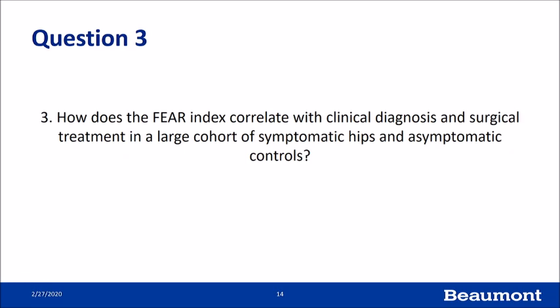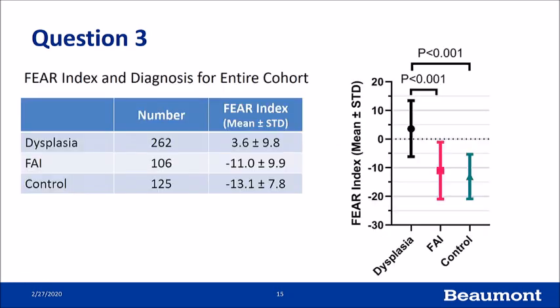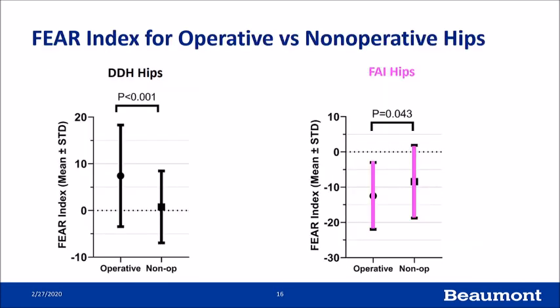The FEAR index correlated well with clinical diagnosis and surgical treatment. Of the 262 dysplastic patients, the mean FEAR index was 3, statistically different from FAI patients and control patients. Looking at only operatively treated hips, the FEAR index was more positive in operatively treated dysplastic patients and more negative in operatively treated impingement patients.